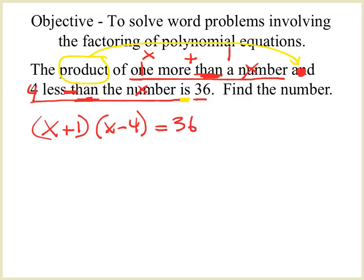Before I can continue, the only way to solve this is through the zero product property. But I can't do that yet because I can't set it to zero. I have to do my double distributing with X plus 1 times the quantity of X minus 4. I multiply X times X to get X squared. The sum gives me my middle term, so that would be a negative 3X. And the product of the last two numbers will be negative 4, equals 36.